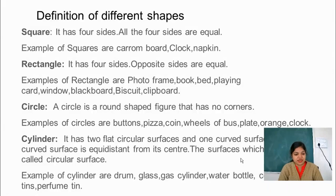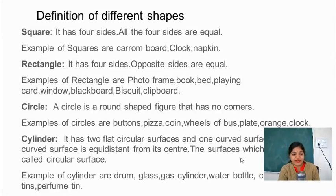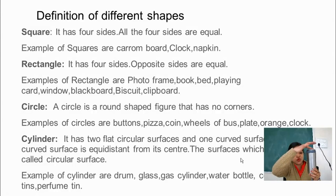So the next one we have is cylinder. It has 2 flat circular surfaces and 1 curved surface. The curved surface is equidistant from its center. I will give you an example of a cylindrical object. You can see this portal — it has 2 flat circular surfaces and 1 curved surface.